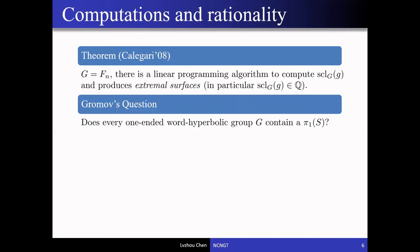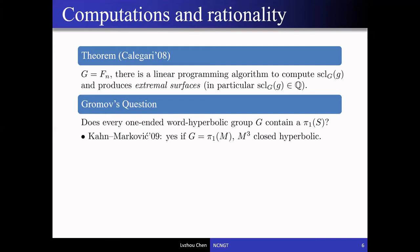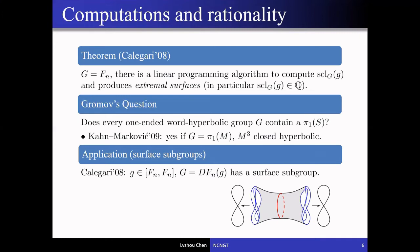This is related to Gromov's question of whether every one-ended word-hyperbolic group contains a closed surface subgroup. The motivating important example is when the group is the fundamental group of a closed hyperbolic 3-manifold. Kahn-Markovic showed that in this case the answer is positive, and this leads to the solution of the virtual Haken conjecture in this important building block. But there are many other hyperbolic groups where it is very difficult to find surface subgroups without using the extremal surface technique.